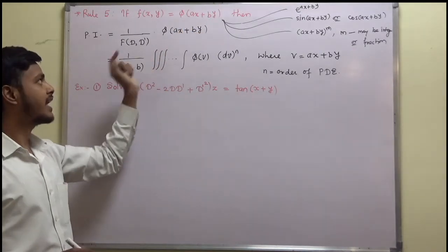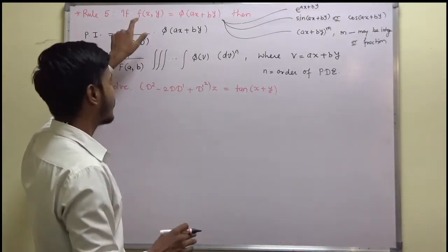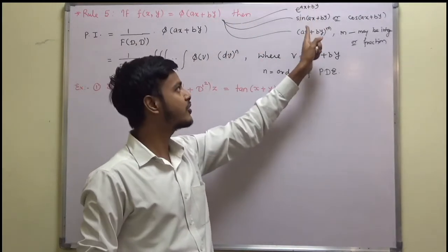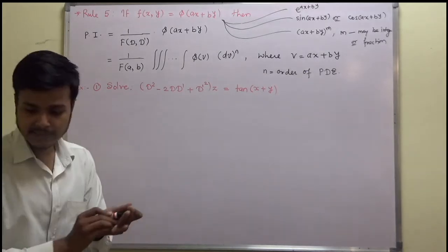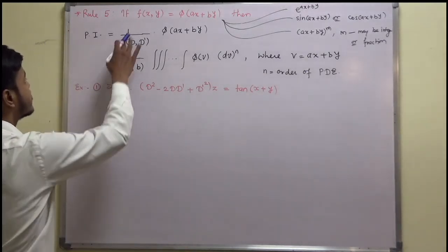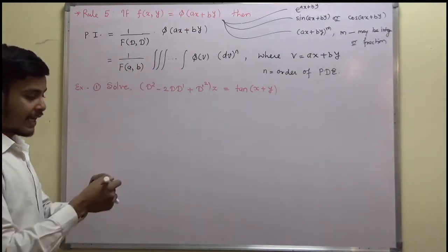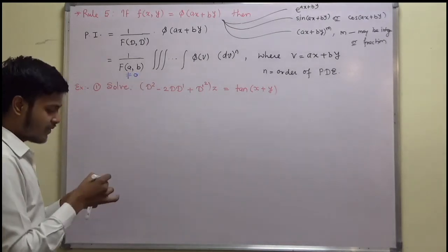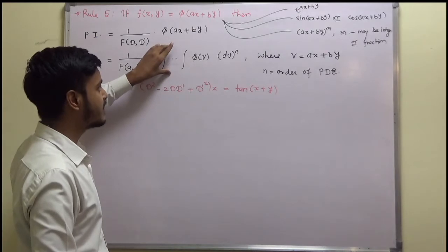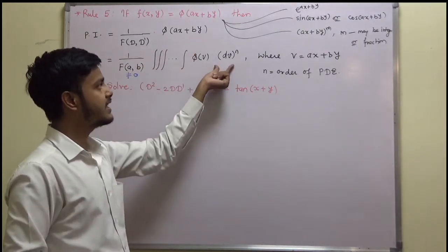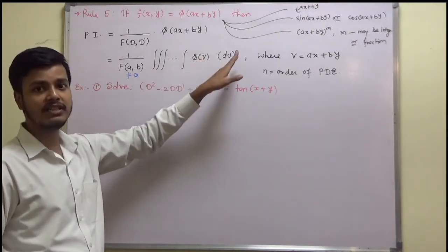If this is the case, then you can apply this rule. Rules 1 and 2 problems can also be solved with the help of this, since phi(x,y) can be e to the power (ax + by), or sin/cos(ax + by). This rule says: write down the particular integral, then put D equal to a and D' equal to b. If this comes out to be non-zero, see what is the order of the differential equation. If the order is 2, there will be 2 integrals of phi(v) dv squared. If the order is 3, then it would be a triple integral of phi(v) dv cubed.